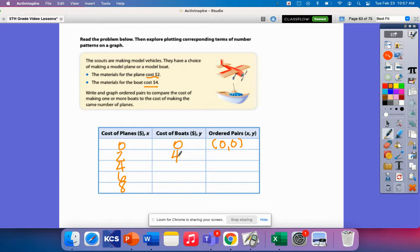Now the cost of the boats to make one boat costs $4. So then two would be eight, 12, and then 16. So just know that these are represented as money. Now if I put these points together, I'm going to have my X value, my Y value, X and Y value, X value, X value, and Y value.